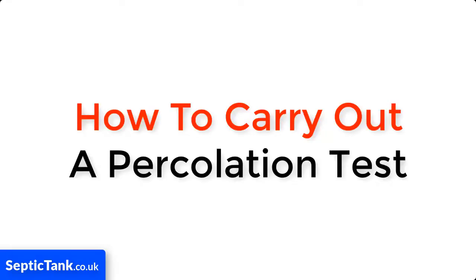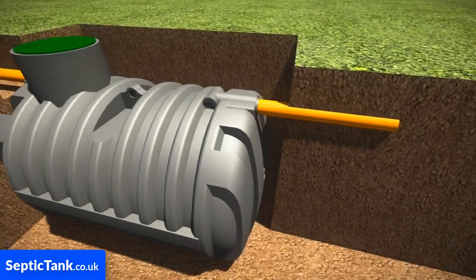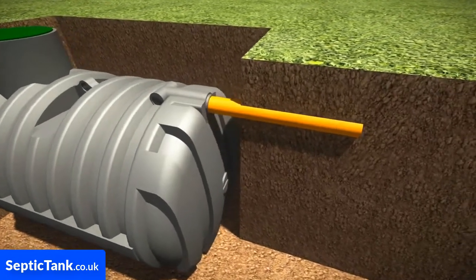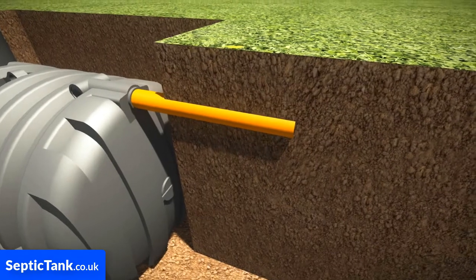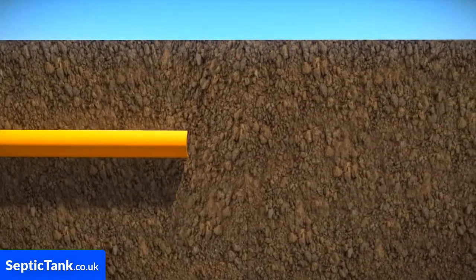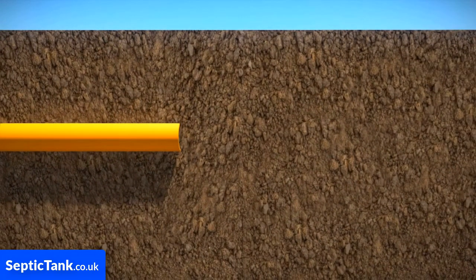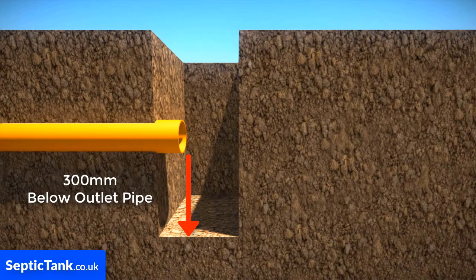How do you carry out a percolation test? You need to first of all work out where you are going to install your septic tank, then work out where the outlet pipe will be. Once you have done that, you then need to dig a hole 300mm square to a depth of 300mm below the level of the outlet pipe.